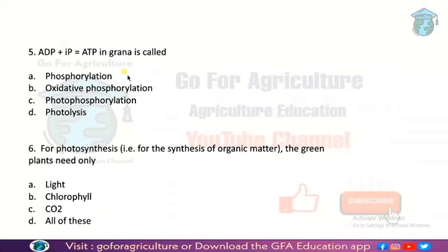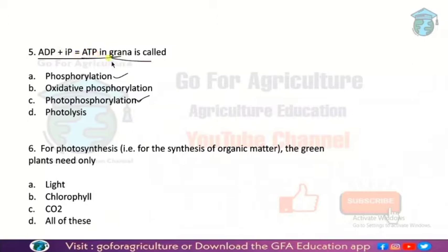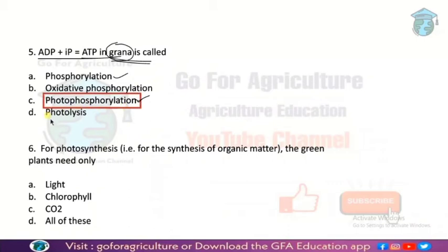Next: ADP plus inorganic phosphate equals ATP in grana — this combination is the formation of which type of phosphorylation? Here there are two phosphorylations — phosphorylation and photophosphorylation. In grana, ADP plus inorganic phosphate gives rise to ATP. Since grana is the site of light reactions, we call it photophosphorylation. So if you guessed photophosphorylation, great job. The answer is option C.